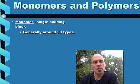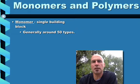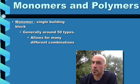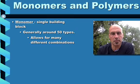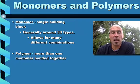All right, monomers and polymers. So a monomer is a single building block, mono meaning one. There's generally around 50 different types of monomers. So this allows, as you can imagine, if you have 50 different types of something, it's going to allow for a lot of different types and combinations.